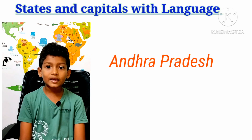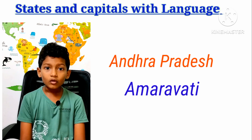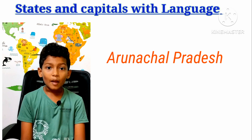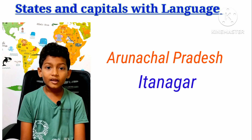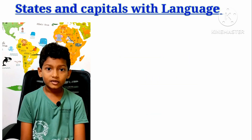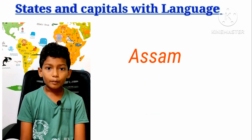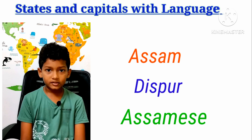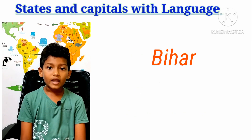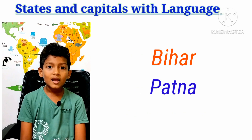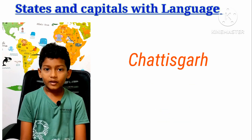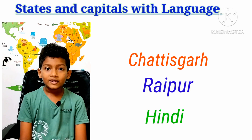Under the 3rds chapter: Amaravati, Language: Telugu. Under the 4ths chapter: Itanagar, Language: English. Assam chapter: Dispur, Language: Assamese. Bihar chapter: Patna, Language: Hindi. Chhattisgarh chapter: Raipur, Language: Hindi.